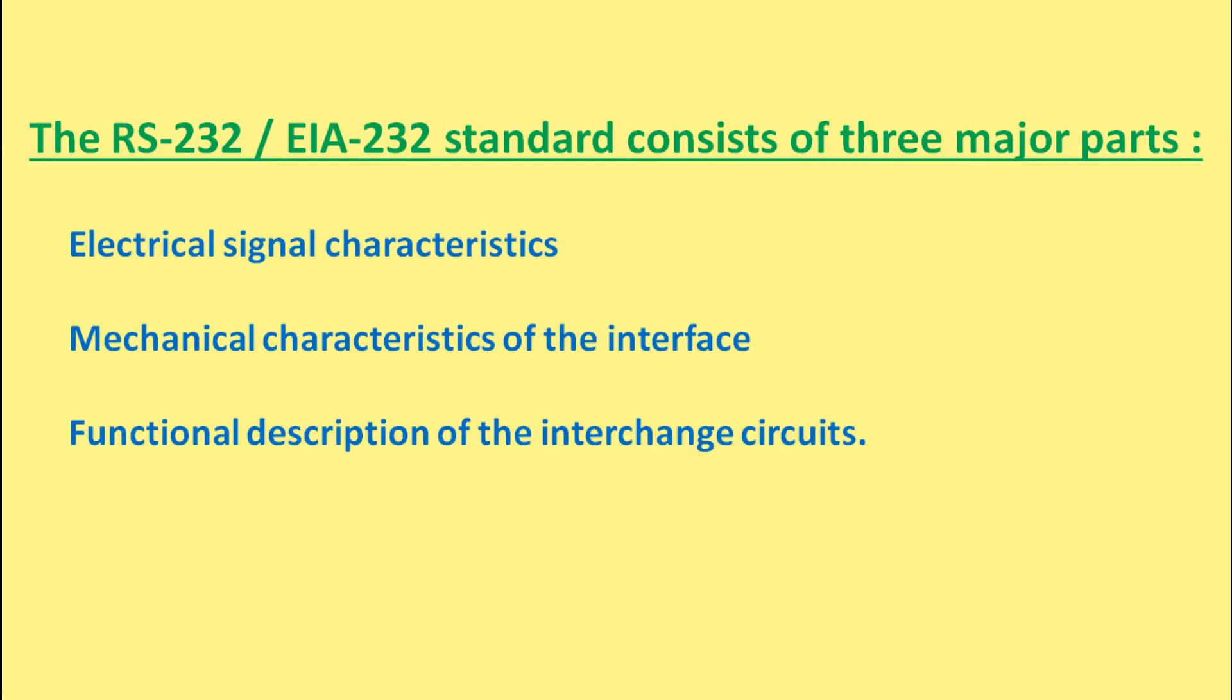The EIA 232 standard consists of three major parts which define electrical signal characteristics, mechanical characteristics of the interface, and functional description of the interchange circuit. Let us go through them one by one.